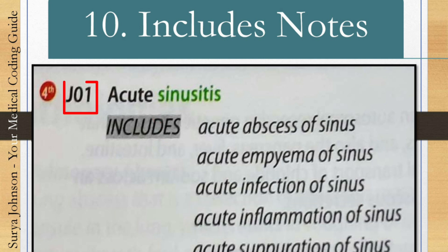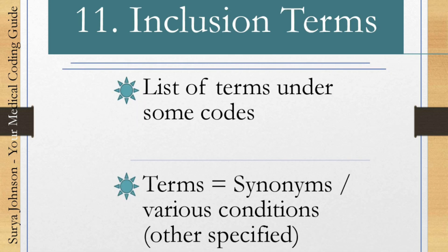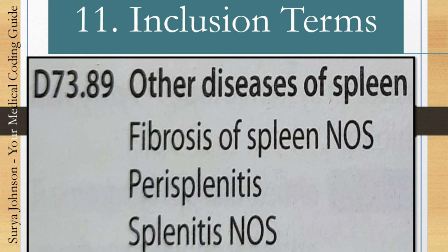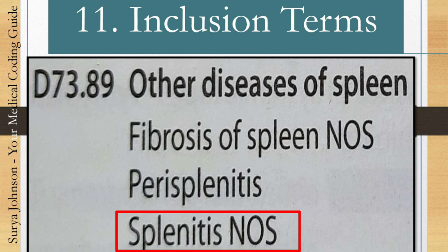Convention 11 is inclusion terms. These are lists of terms under some codes that give you synonyms or various conditions for other specified cases. For example, D73.89 'other disease of spleen' lists terms below it such as fibrosis of spleen and perisplenitis — these should all be coded as other specified spleen disease. If a doctor documents 'splenitis,' you can choose D73.89 because that category of code includes all these terms.